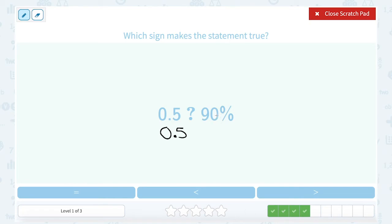0.5 is already a decimal. What would 90% be as a decimal? Well, remember, 90% is 90.0. So to make it a decimal, I would move my decimal point two places to the left, and that would be the same thing as 0.90, or just 0.9.